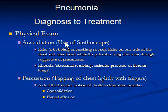Auscultation is the use of a stethoscope on different parts of the body to hear sounds produced within the body. Rales are a bubbling or crackling sound; rales on one side of the chest, and rales heard while the patient is lying down, are strongly suggestive of pneumonia. Ronchi are an abnormal rumbling sound indicating the presence of fluid in the lungs. Examples of these sounds are available on YouTube and on the website of the Academy of Professionals.